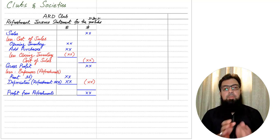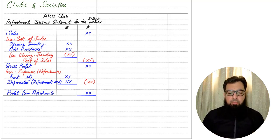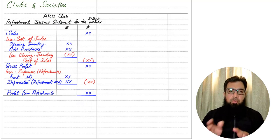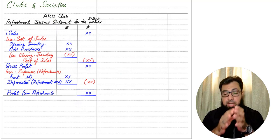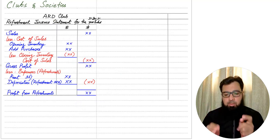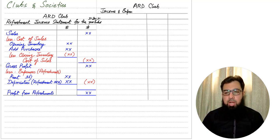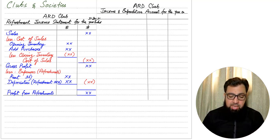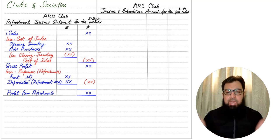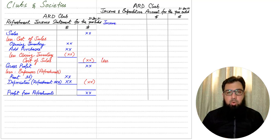If you have already watched the first part of the video where we made the refreshment income statement, let us now move forward and make the main income statement for the club, which is known as the income and expenditure account. First, we need to write the name of the club — normally these things are already written in an examination question. There will be only two headings: income and expenditure.